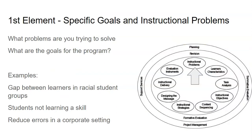Now let's go through the nine elements as we follow along the oval. The first one is goals and structural problems — essentially, what problem are you trying to fix, or what are the goals of the program? For example, a gap between learners and racial groups, a student not learning a certain skill, or errors happening that you need to reduce. What is the problem is the big question here.